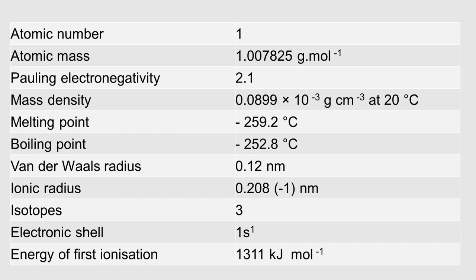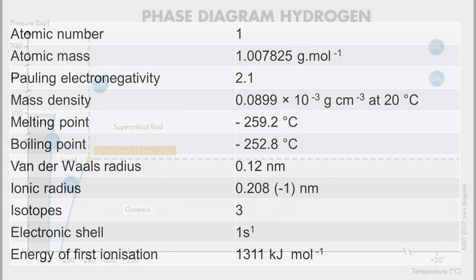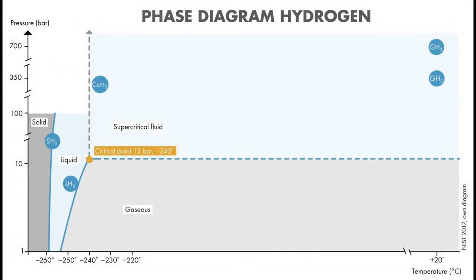Under normal conditions, hydrogen is a colorless and odorless gas formed by diatomic molecules with a molecular weight of about two grams per mole. Its boiling point of about minus 253 degrees centigrade is very low, which explains the high energy costs when liquefying it, for instance for transport purposes. The most important commercial use of hydrogen is ammonia synthesis.